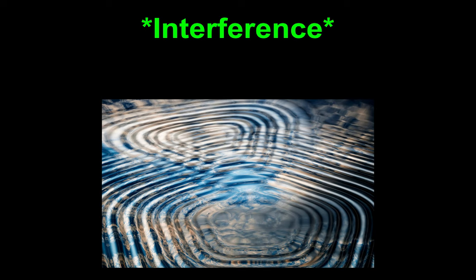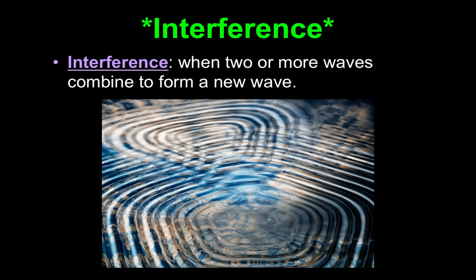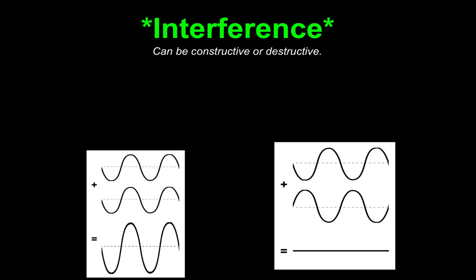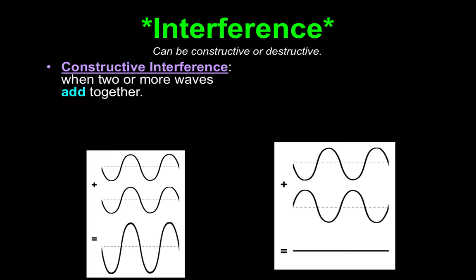Interference — this was also a station on Friday. Interference is when two or more waves combine to form a new wave. Do you remember the station where you dropped two marbles? If you looked at the side of the bin you were dropping the marbles into, you could see ripples of waves hitting each other — that's interference. You had the waves from one marble and the waves from the other colliding into one another.